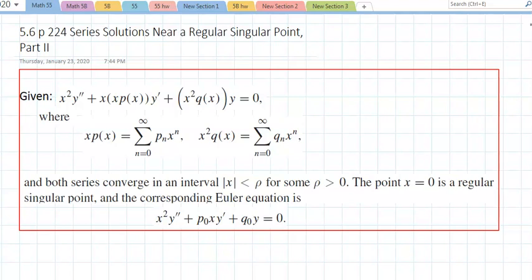Section 5.6 is on page 224, series solution near a singular point, part 2. So given this equation again, they like to write it like that. And if you look at it, it really looks like y double prime plus x squared p of x y prime plus x squared q of x.